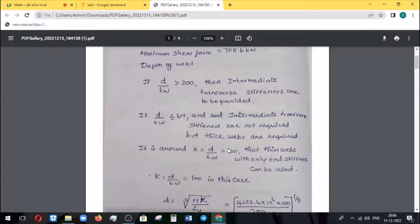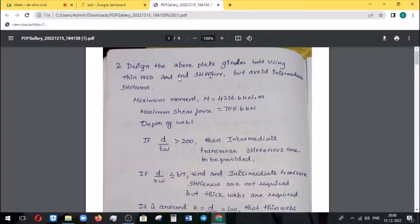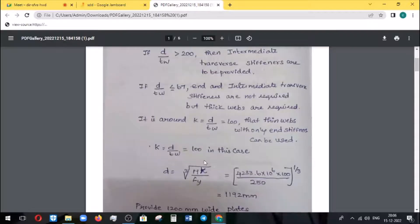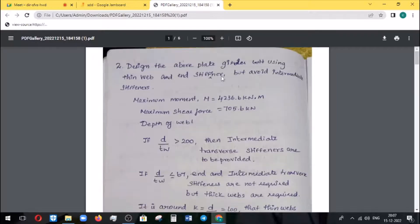Now if D by TW is unread, then you can provide all the stiffness. Let's understand the three cases. You are going to find out the end stiffness and also the intermediate stiffness. This is K by D, D by TW. If you have TW or depth or anything, we can do this value. We can show the end stiffness but avoid intermediate stiffnesses.